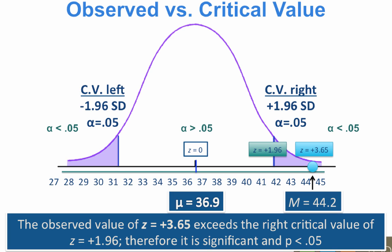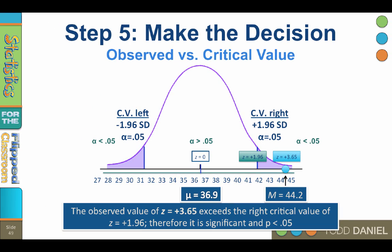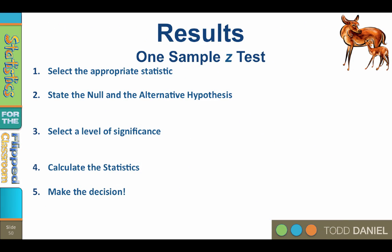The null hypothesis states that there was no difference between the sample mean and the population mean. We reject the idea that there was no difference. We conclude that there was a difference between the sample mean and the population mean. So let's review these five steps of hypothesis testing for the one-sample z-test.